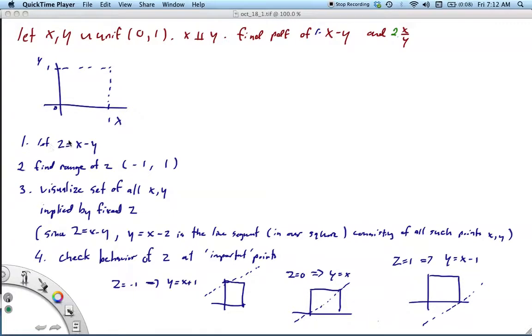Okay, and so you'd imagine any point in this square, then, is going to be equally probable. Okay, so we're going to let our new random variable Z be X minus Y. A sensible thing to do might be to find the range for Z. So what values could Z take on?